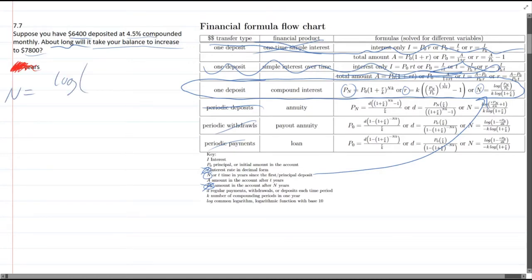So we have log PN divided by P0 divided by K times log 1 plus R over K. We need to write down what all of these variables are. PN, that's the final amount, which is 7,800. Right there, 6,400 is the initial amount, which is P0, principal or initial amount. So that's 6,400.